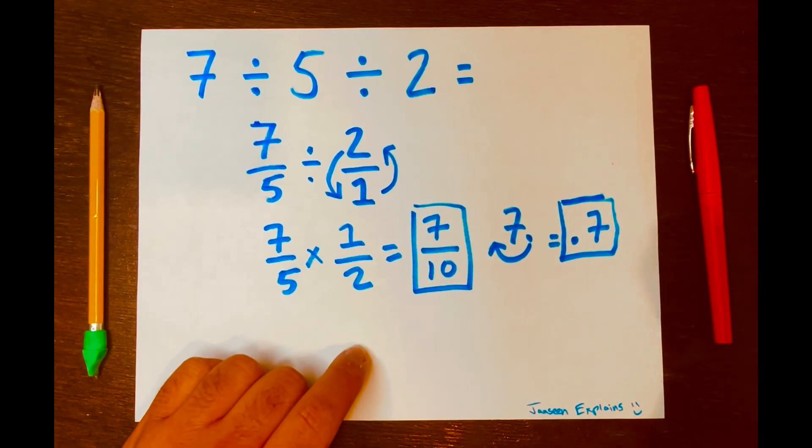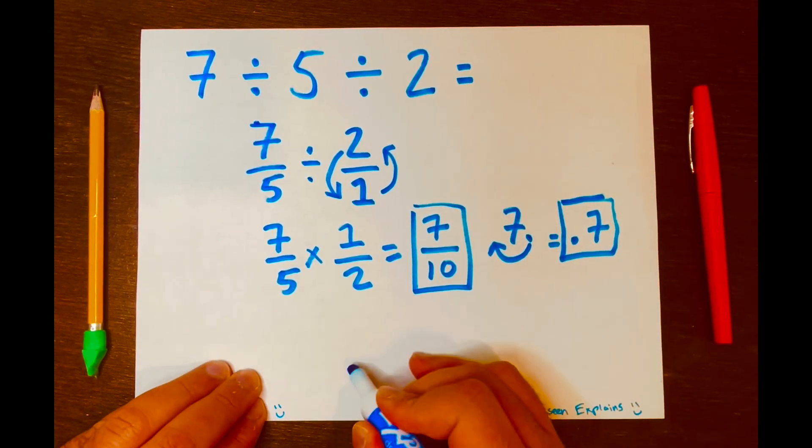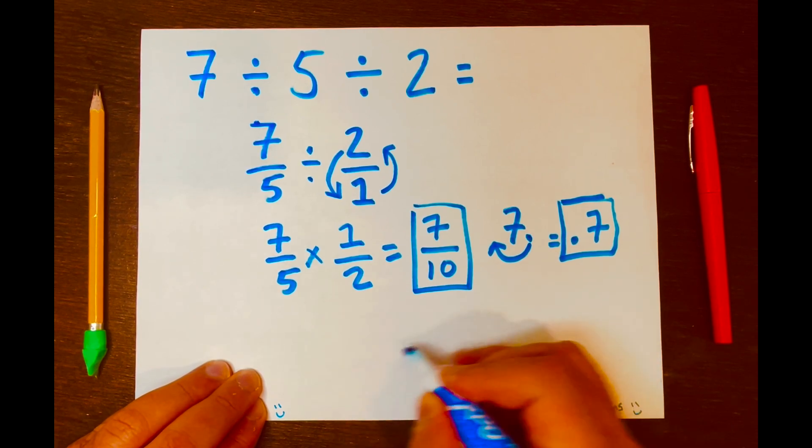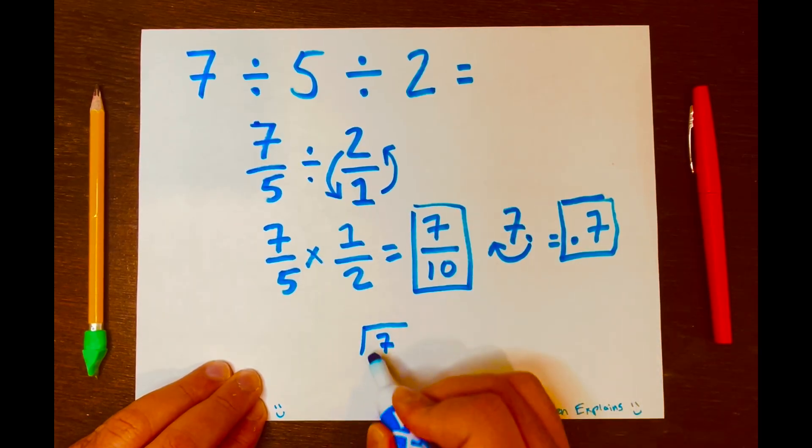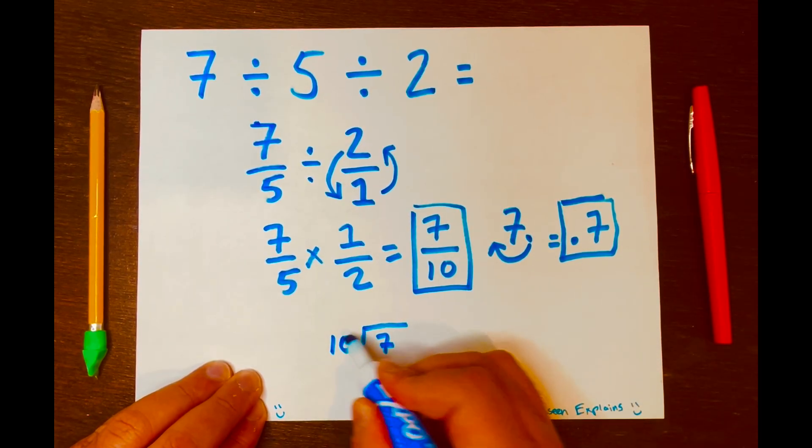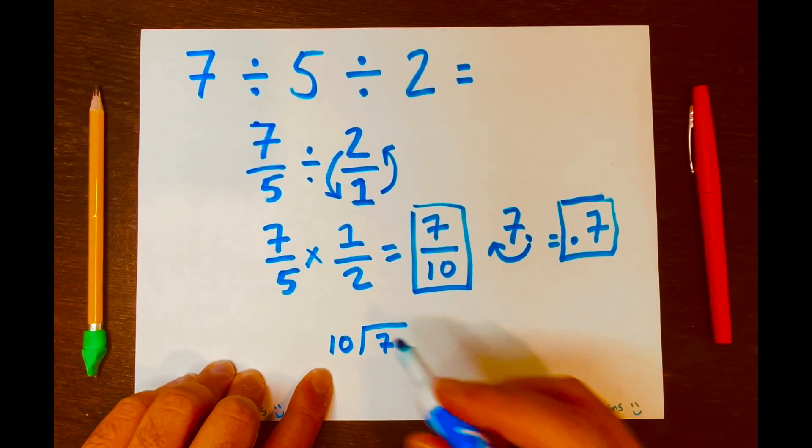Now we can use the traditional way by using long division. And I have space to do this here. So we can write 7 as the dividend, 10 as the divisor. So how many times can 10 fit into 7? You cannot. So it's 0.